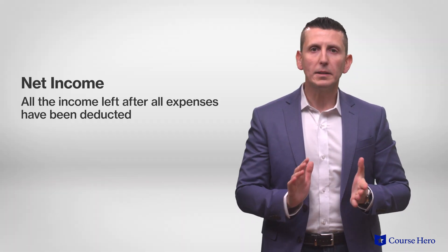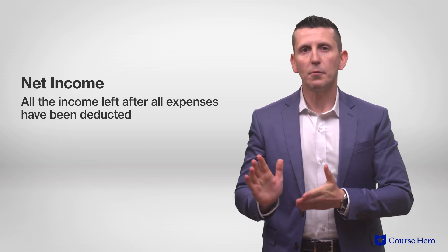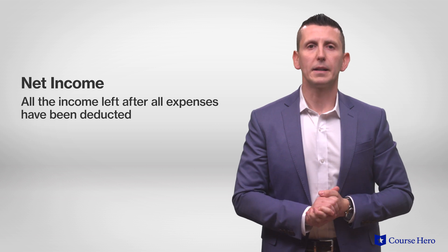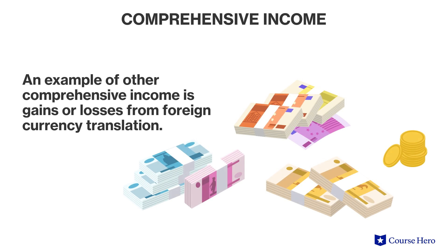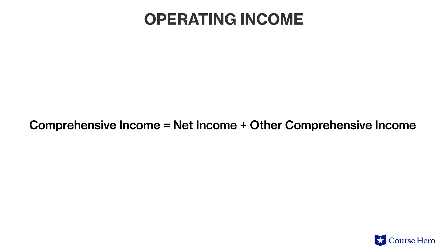Net income is all the income left after all expenses have been deducted, regardless of whether they were operating or non-operating expenses. The final step is to calculate comprehensive income, which is the sum of net income and other comprehensive income. Comprehensive income includes transactions that do not affect the company's operations. An example of other comprehensive income is gains or losses from foreign currency translation. The formula is: net income plus other comprehensive income equals comprehensive income.